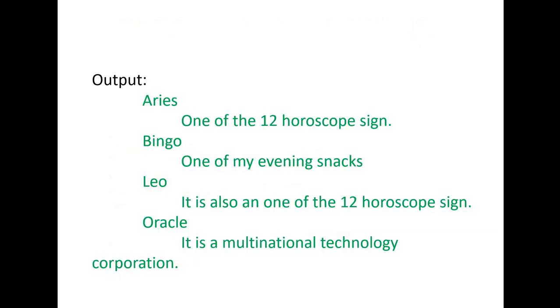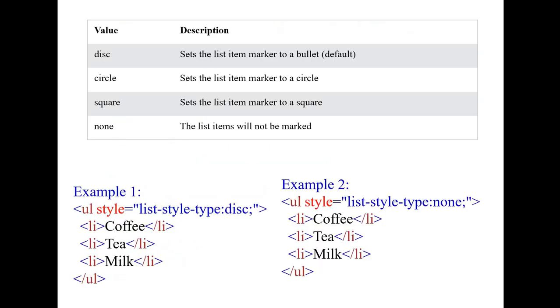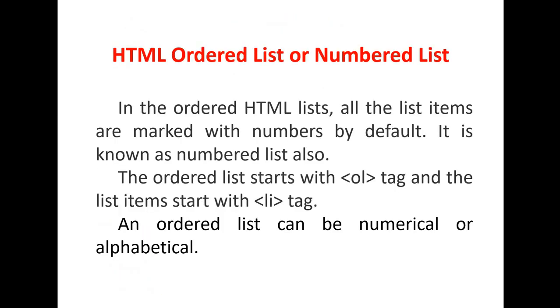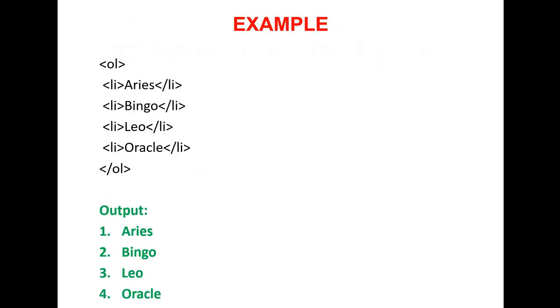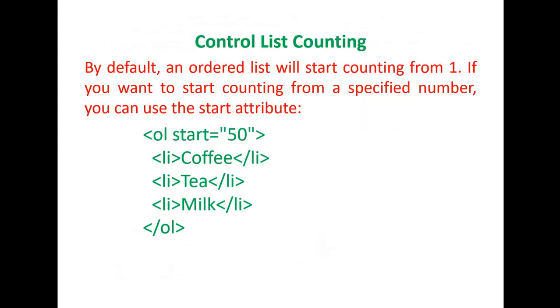This is the output of the definition list. In this way, lists can be used in HTML. HTML lists are defined in three ways: ordered list, unordered list, and definition list.